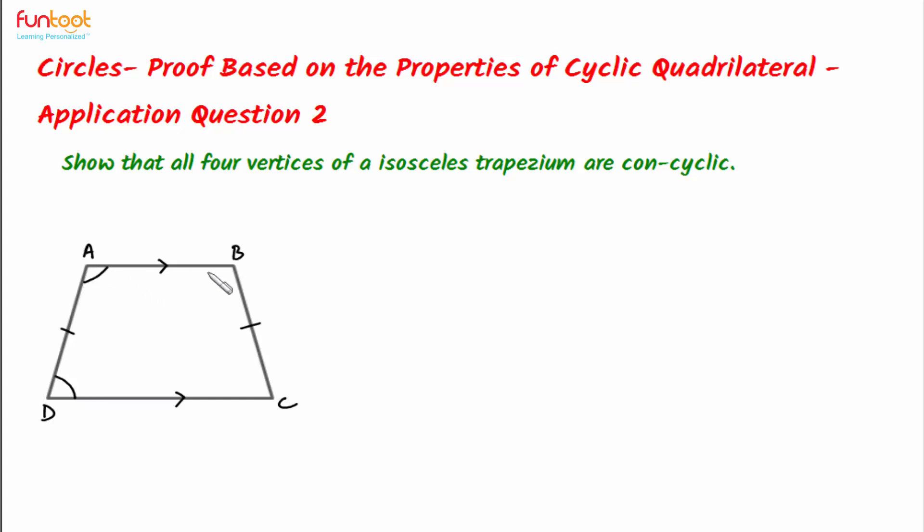For proving ABCD to be a cyclic quadrilateral, let's think of proving angle A and angle C as supplementary and angle B and angle D also as supplementary. If we can prove one pair, that is if we can prove angle A and C are supplementary, automatically angle B and angle D will be supplementary.